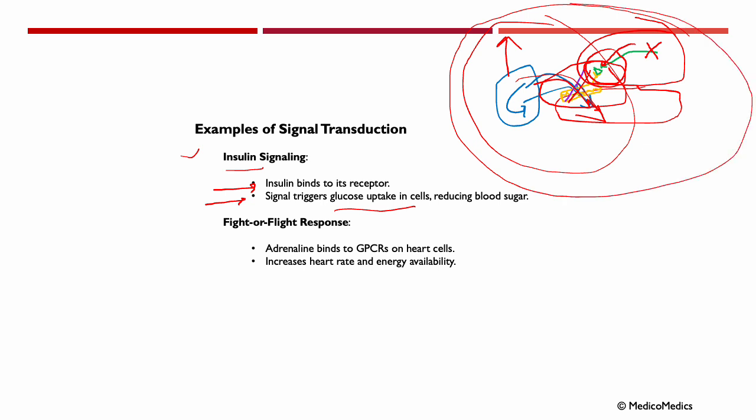Another example is the fight or flight response. Adrenaline binds to G-protein coupled receptors on our heart cells. This would increase heart rate and energy availability. Now, what happens if these processes go wrong?